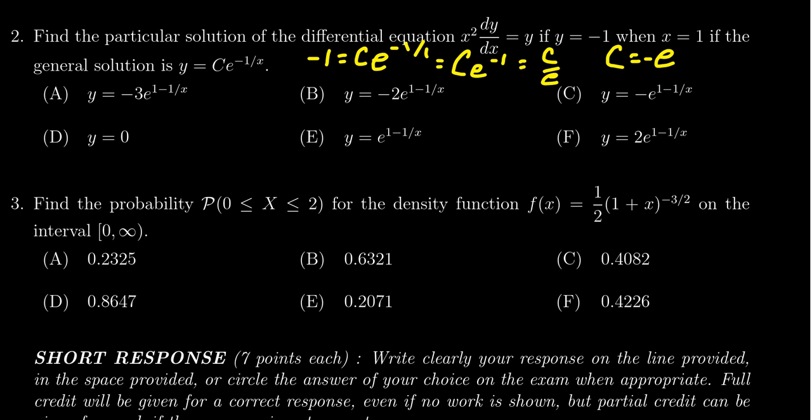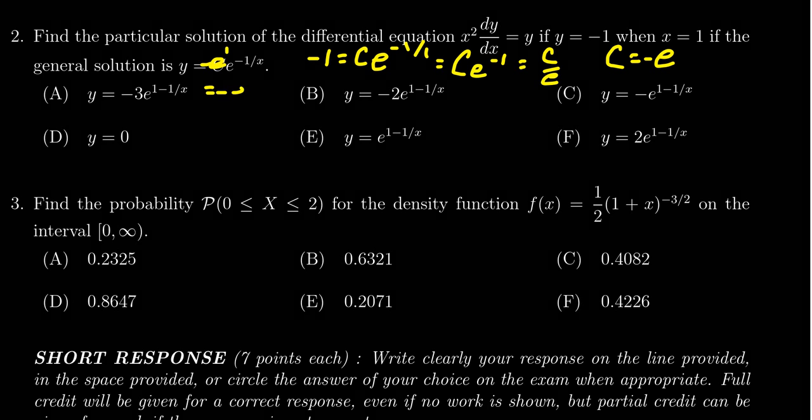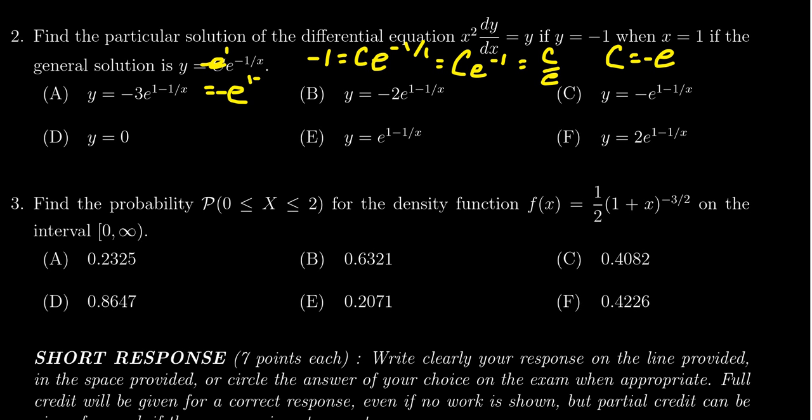Therefore, that's the coefficient we need. If you plug in negative e for the c value, since you have two e's there and this is an exponent of one, you can add those together. So I can write this as y equals negative e to the one minus one over x power.